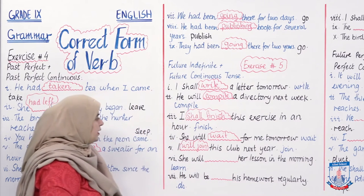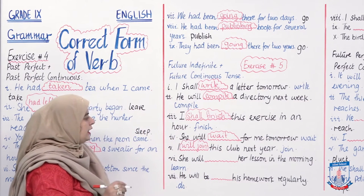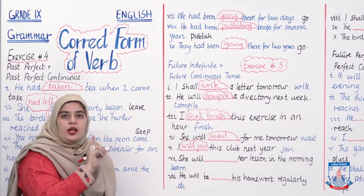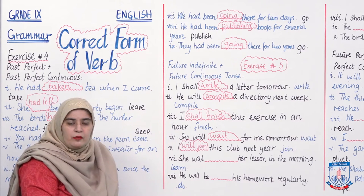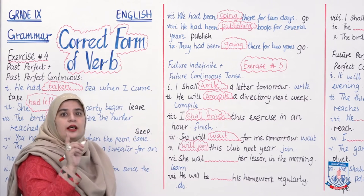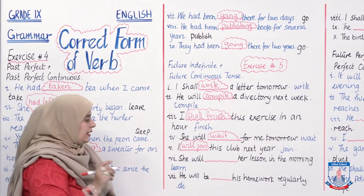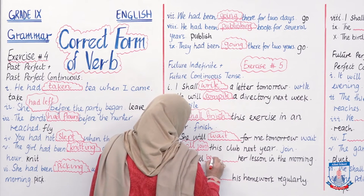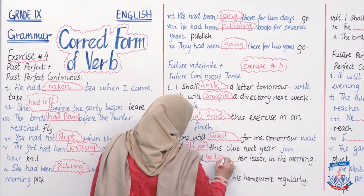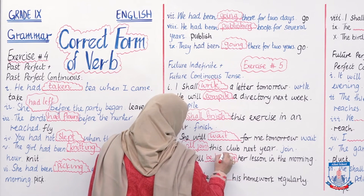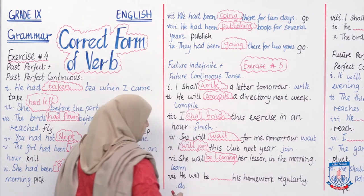'She will ___ her lesson in the morning.' She will be continuously doing something in the morning — so this is future continuous. Answer: 'She will be learning her lesson.'